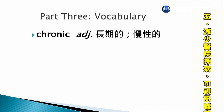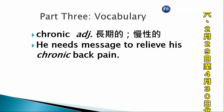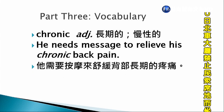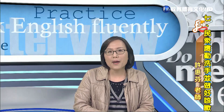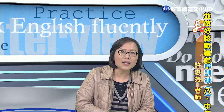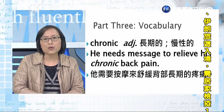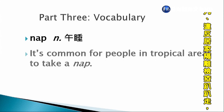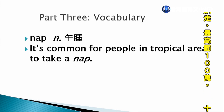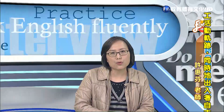Chronic，長期的或者是慢性的。He needs massage to relieve his chronic back pain. 他需要用按摩的方式來舒緩背部長期的疼痛。Relieve pain就是疏解疼痛，chronic back pain就是背部長期的疼痛。Chronic這個字也可以用在慢性病，chronic illness。Nap，午睡，可以是名詞也可以是動詞。It's common for people in tropical areas to take a nap. 熱帶地區的人很常睡午覺，tropical area就是熱帶地區，take a nap就是睡午覺的名詞用法。